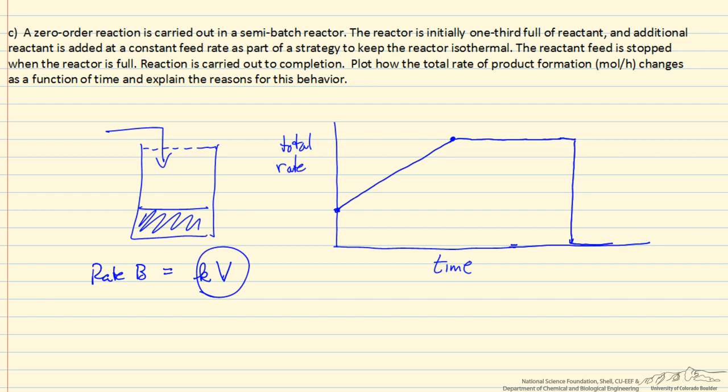In reality, a zero-order reaction at low-concentration reactant is going to become first-order, typically. So that means at some point where we get to relatively low concentration, we would see some exponential decrease in concentration and exponential decrease in rate as a function of time. The rate approaches zero at longer times.